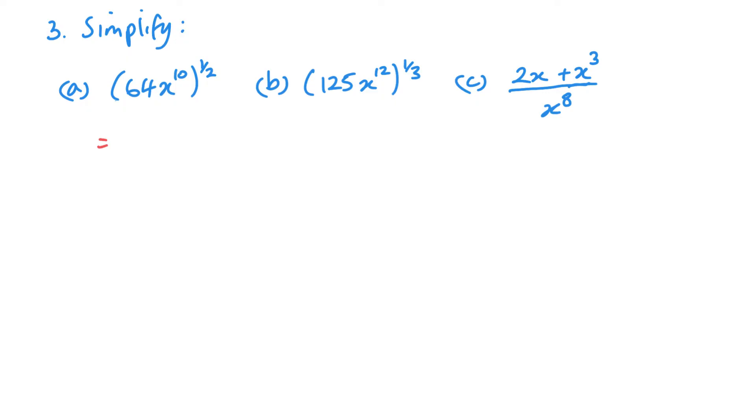I'm just going to jump in here in question 3. Simplifying these ones, 64 to the power of half is the square root of 64, which is 8. And then x to the power of 10 raised to the power of half, you multiply the powers, so x to the power of 5. And that's A.